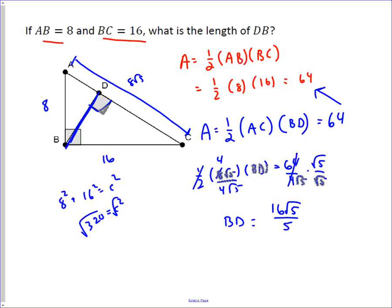So this cancels to sixteen, root five times root five equals five. So the length of BD is sixteen root five divided by five. It's a very important technique to use in different ways - just recognizing that you can find the area of a triangle in two different ways.